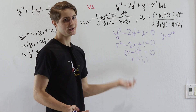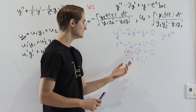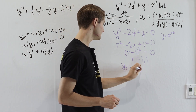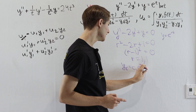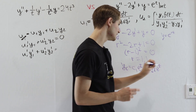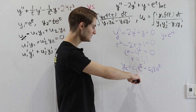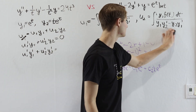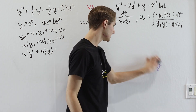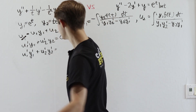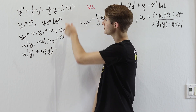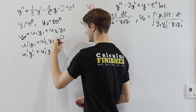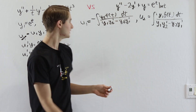With a double root at r = 1, the complementary solution is c1·e^t + c2·t·e^t. So y1 = e^t and y2 = t·e^t are our two functions for variation of parameters. The right-hand side f(t) this time is e^t · ln(t).